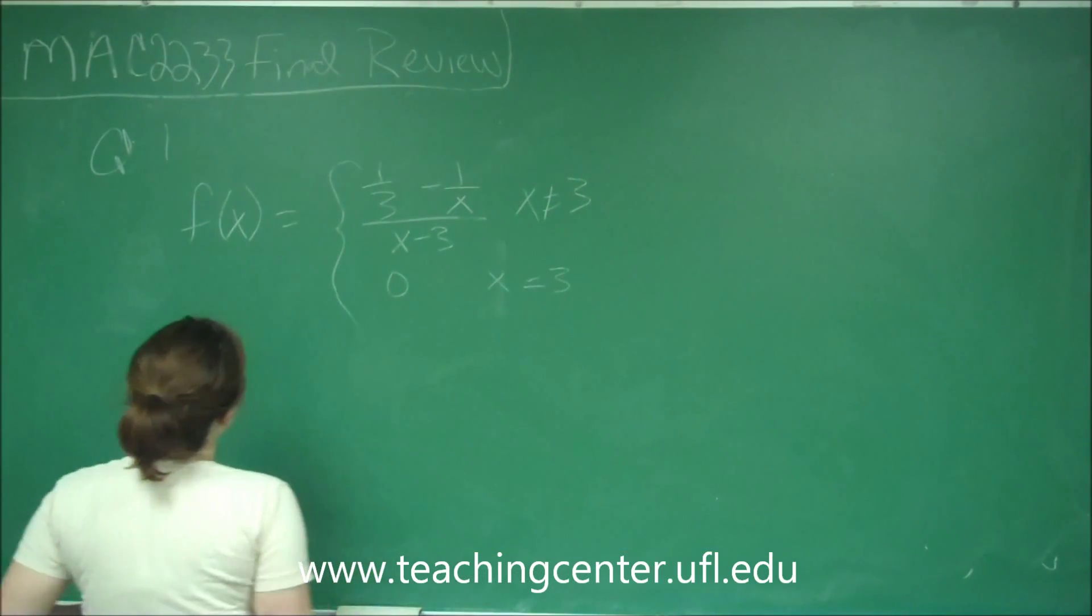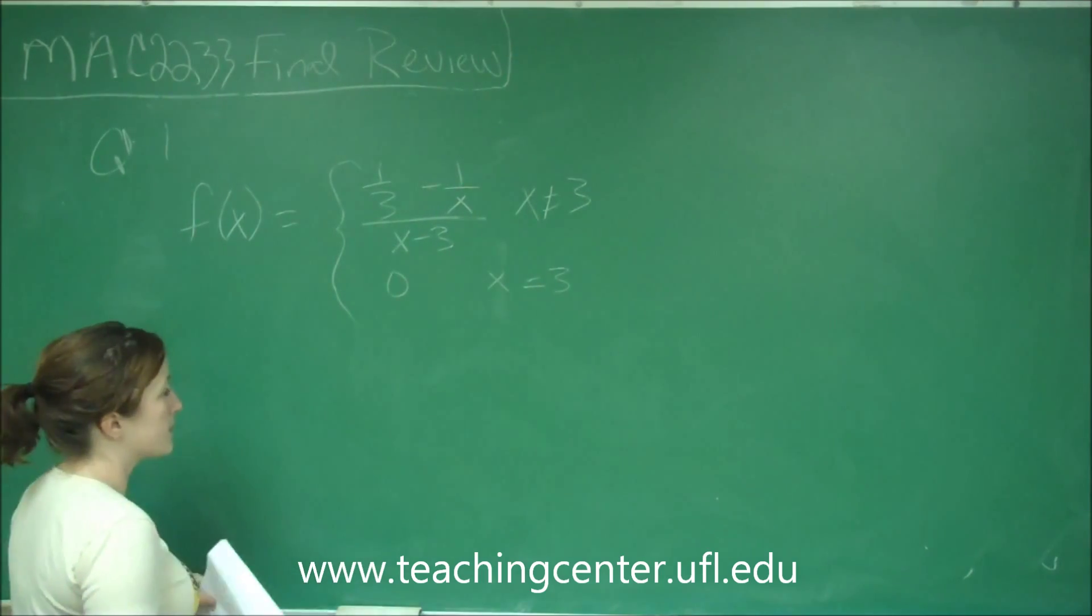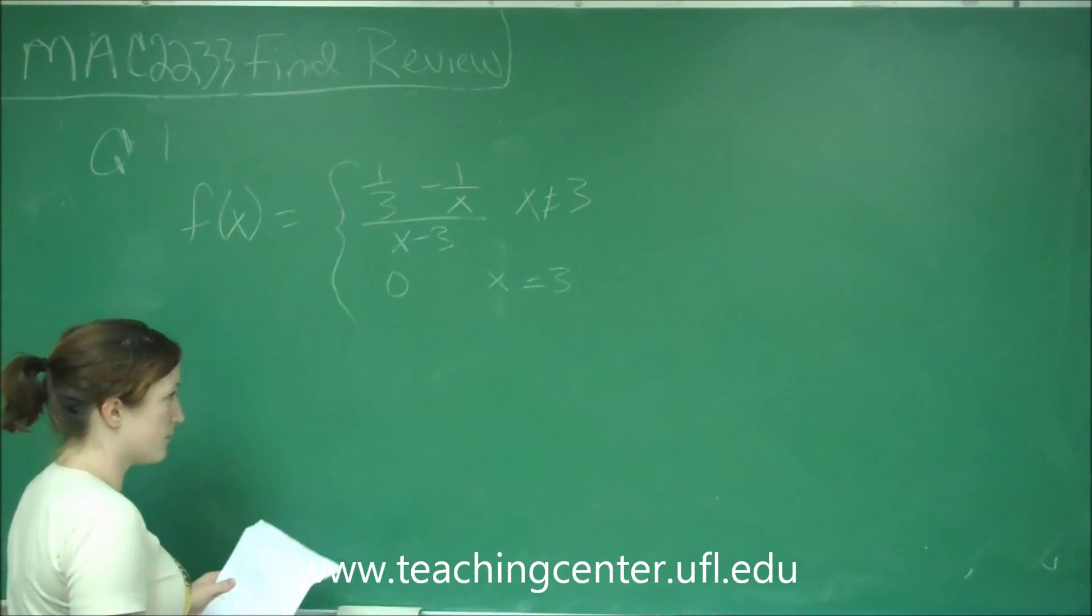So let's start. It says f of x is equal to 1 third minus 1 over x all over x minus 3 when x is not equal to 3, and 0 when x equals 3.